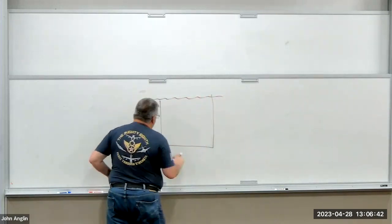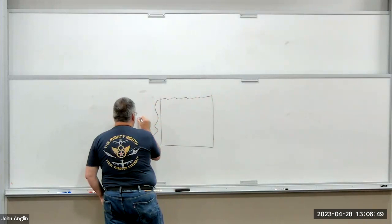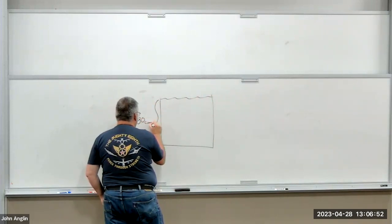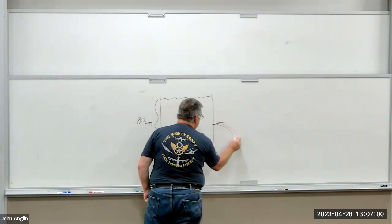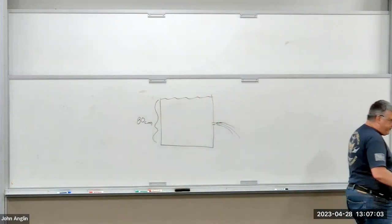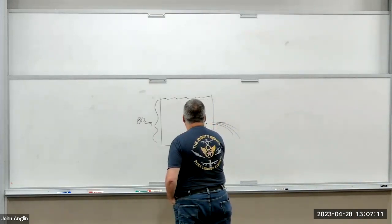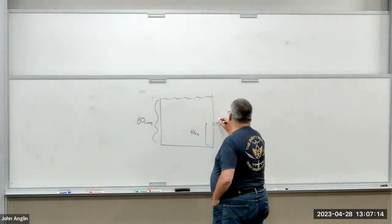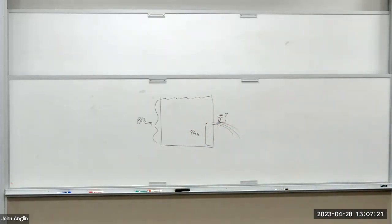Let's start with a pretty simple problem. We have some kind of bucket of water — some fluid — and the depth of this thing is 80 centimeters. Somewhere right about here there's a hole, and that hole is 40 centimeters from the bottom. We know the water comes out of the hole with some velocity, so what we want to do is calculate the velocity of the water coming out.